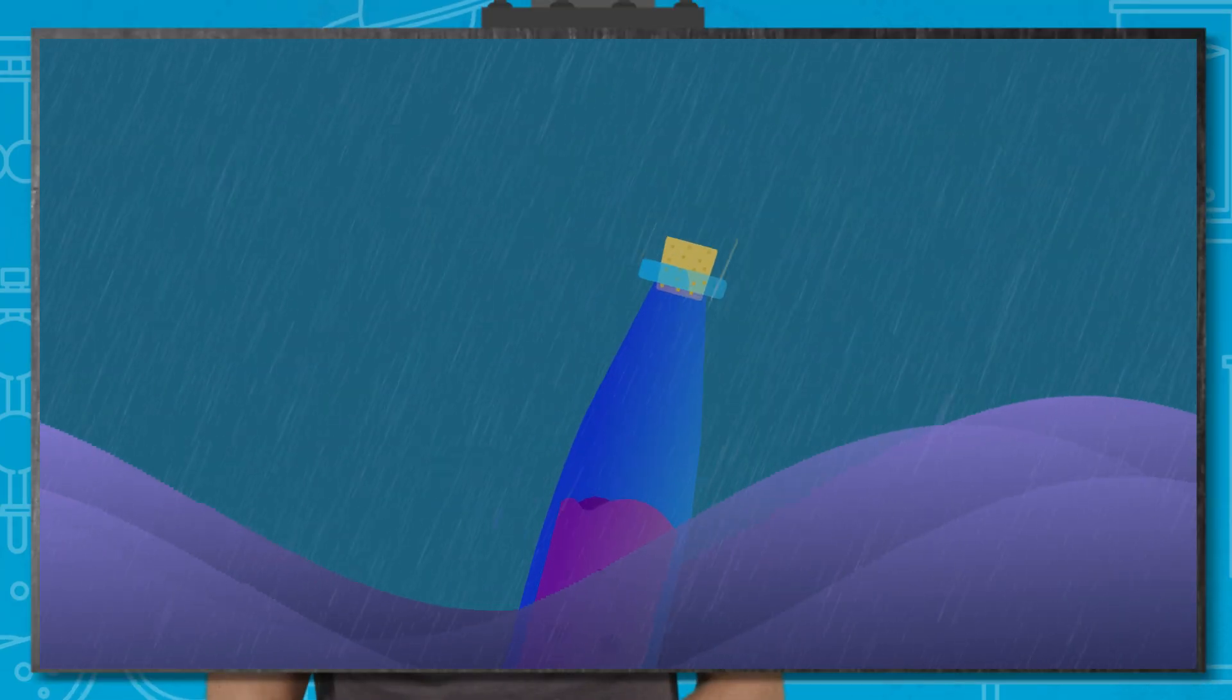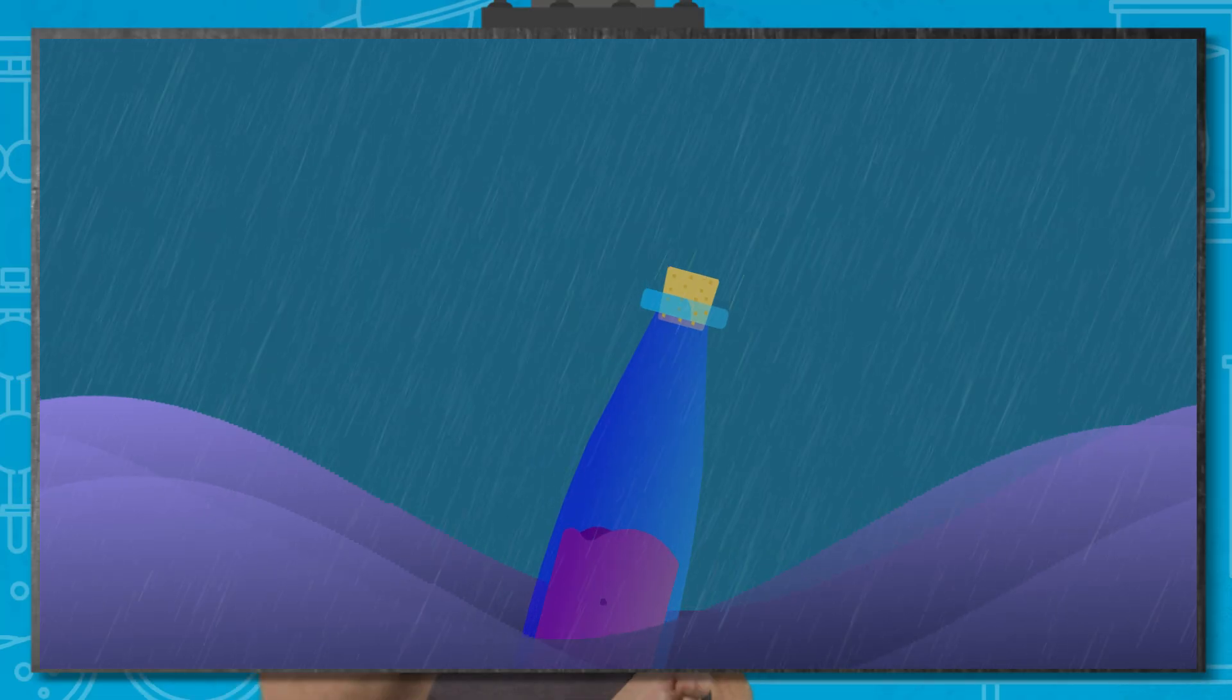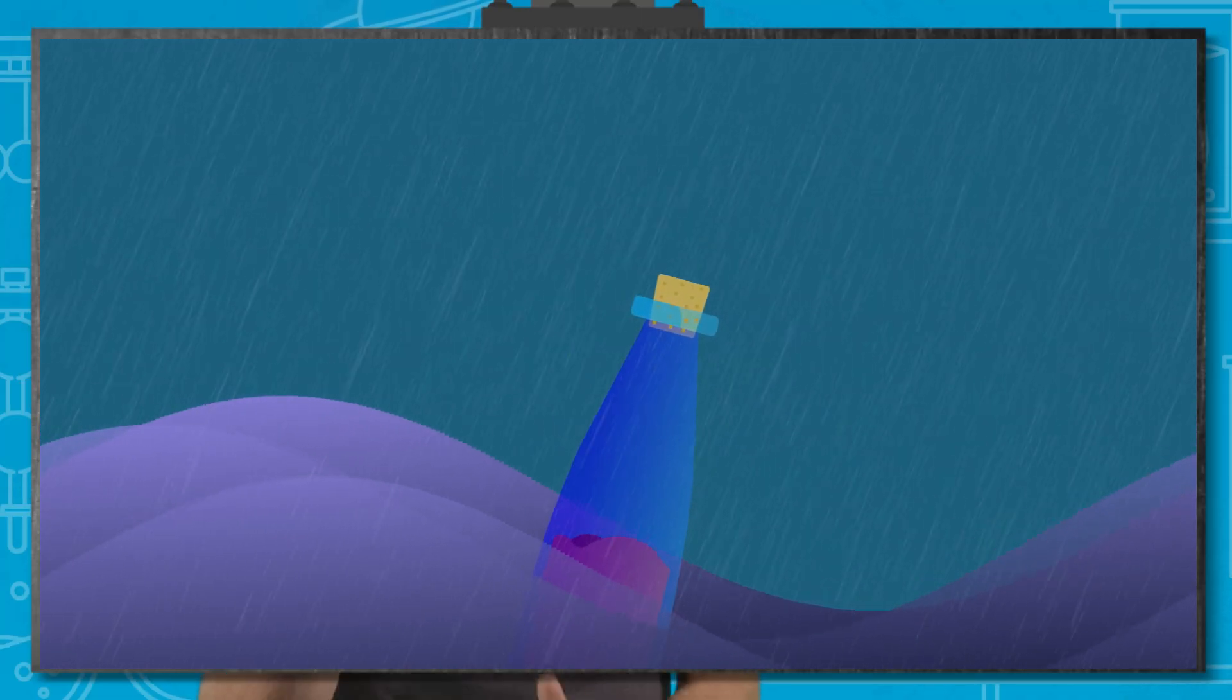But watching the procession of waves a little further out tells a different story. Seabirds and message-bearing bottles float on the surface of the sea, and as a wave passes we see them rise and fall, but they ultimately stay in roughly the same place. That's because it's not the water that's heading for the shore, it's the energy within the water.